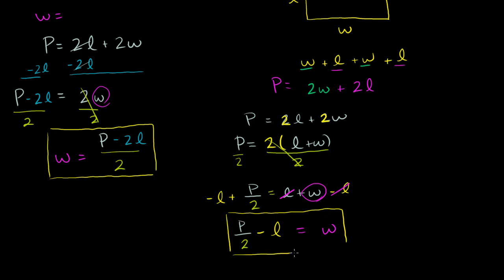And you're probably saying, hey, Sal, wait. These things look different. P minus 2l over 2, that looks different than P over 2 minus l. And they're not. Think about this. We could rewrite this as P - this over here is the same thing as P over 2 minus 2l over 2. Right?